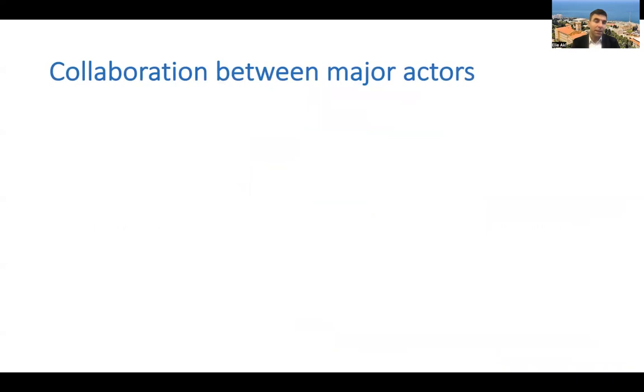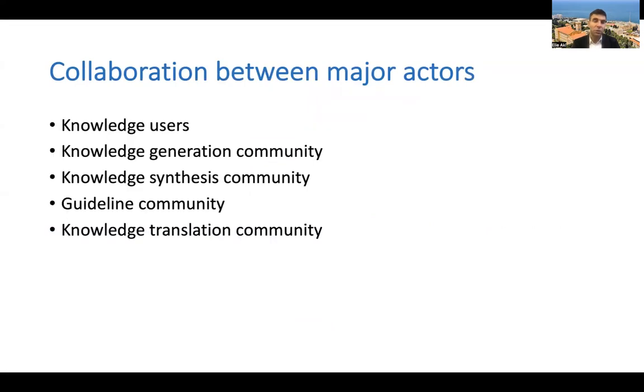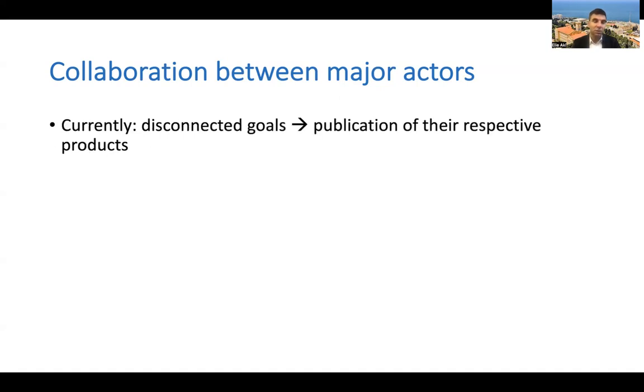I'll end up by talking about the importance of collaboration between the major actors, and there are many actors. We talk about knowledge users, knowledge generation communities, these are the trialists, the knowledge synthesis community, the systematic reviewers, the guideline community, and also the knowledge translation community. These actors have to work together to make sure that the end goal of serving the community, the society, the public in terms of guidance is achieved.